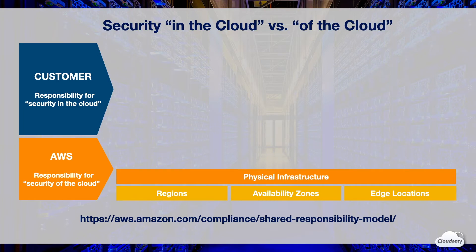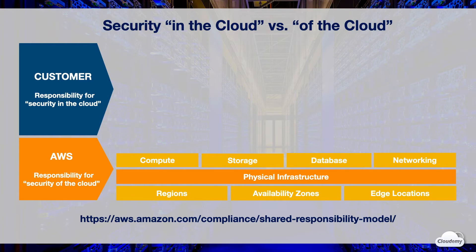AWS is responsible for everything that composes the physical infrastructure, such as server racks, power cables, and physical devices. AWS is also responsible for providing secure underlying compute, storage, database, and networking for customers. For instance, they must provide safe physical hosts and virtualization under EC2 instances, and secure networking that connects each instance.